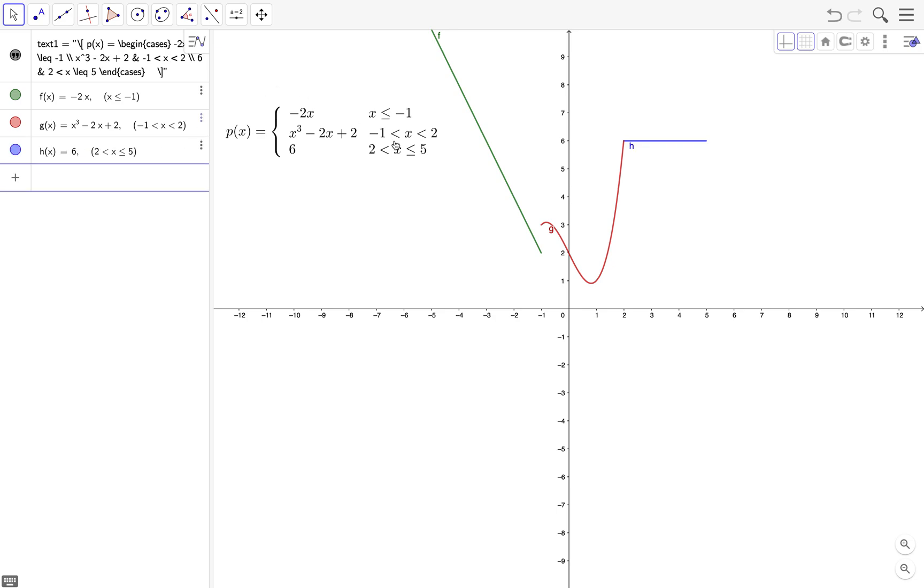Next we don't want the labels of the functions, so we hide the labels and at the same time we change all the color to black. To do that we click one of the graphs and then change the color to black.